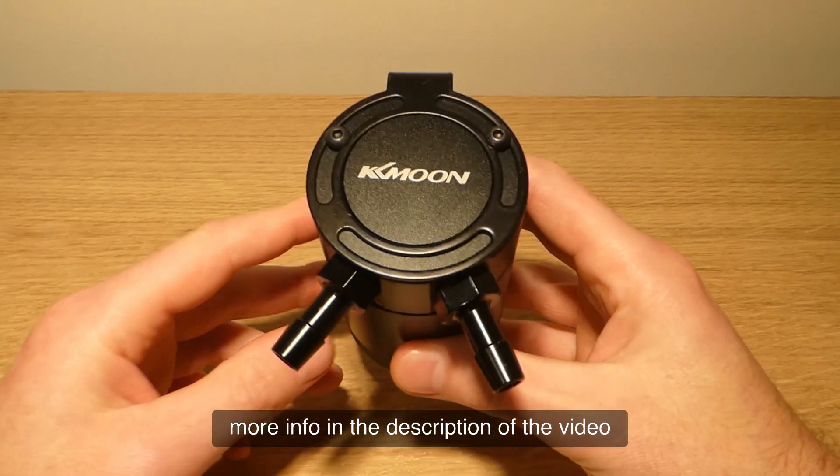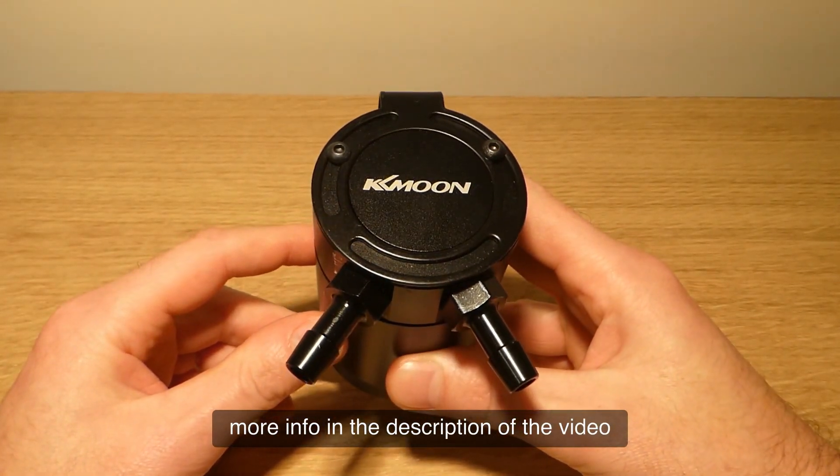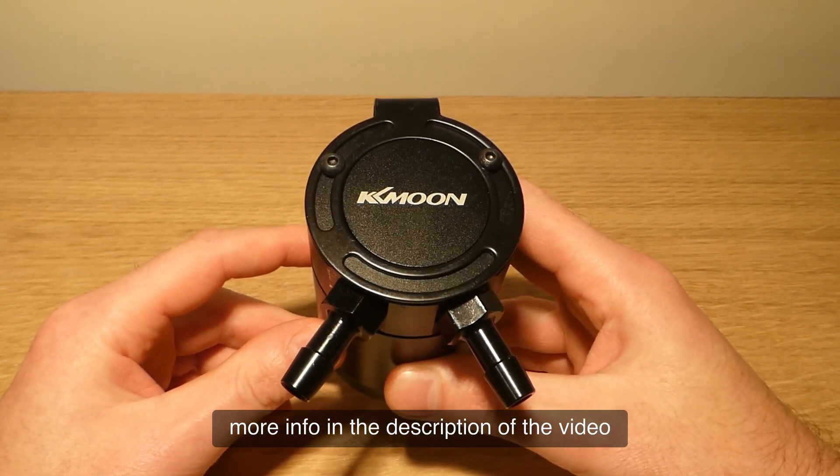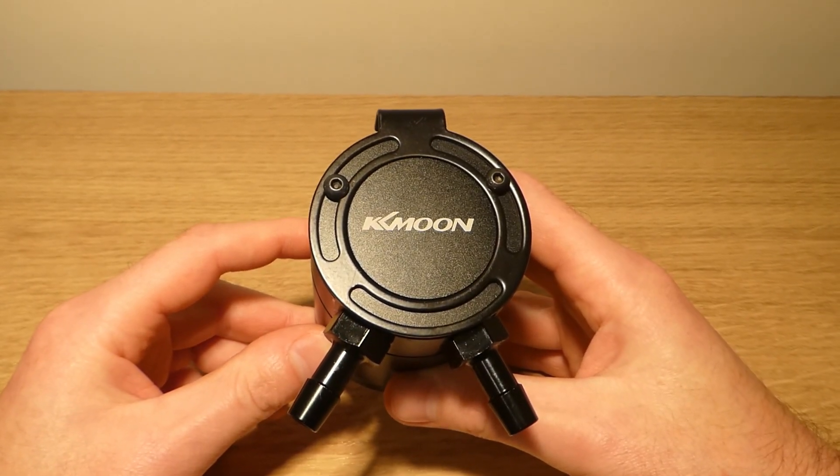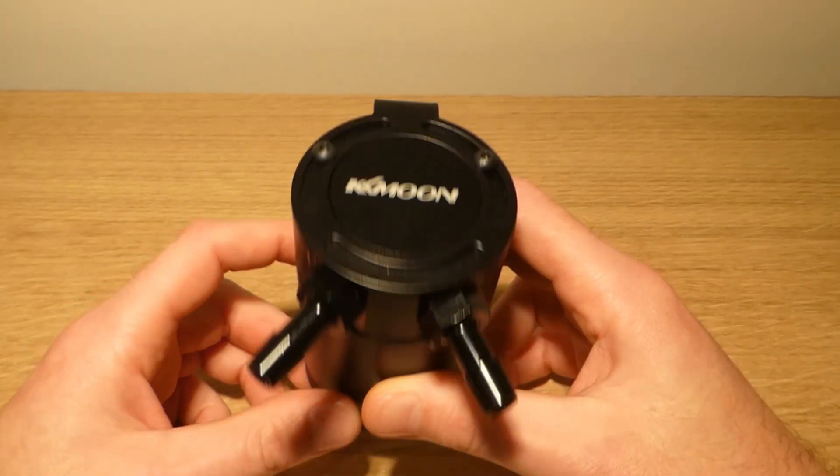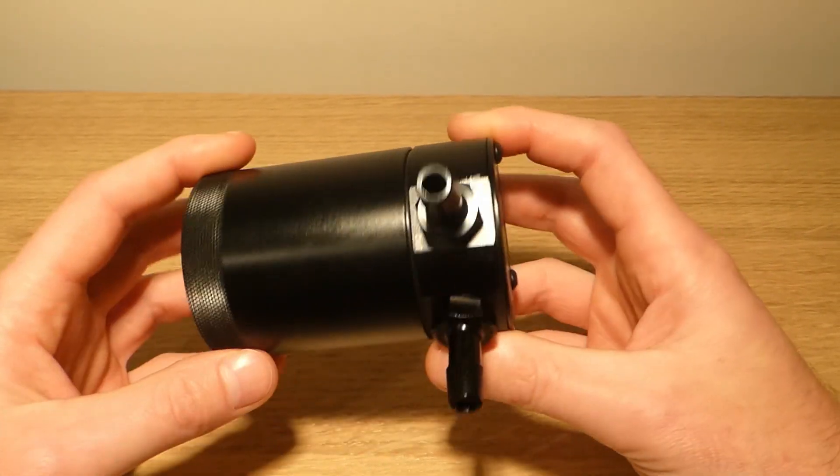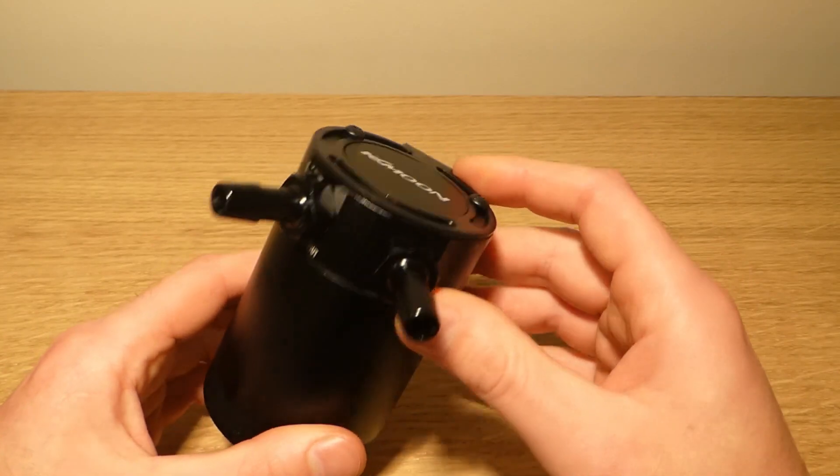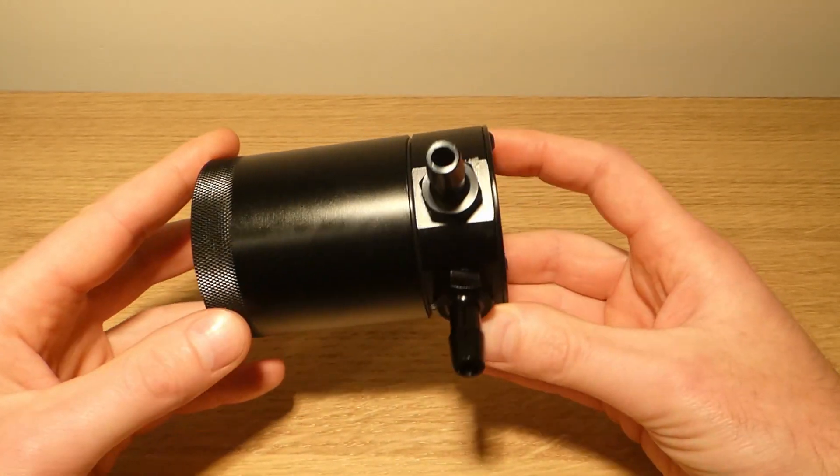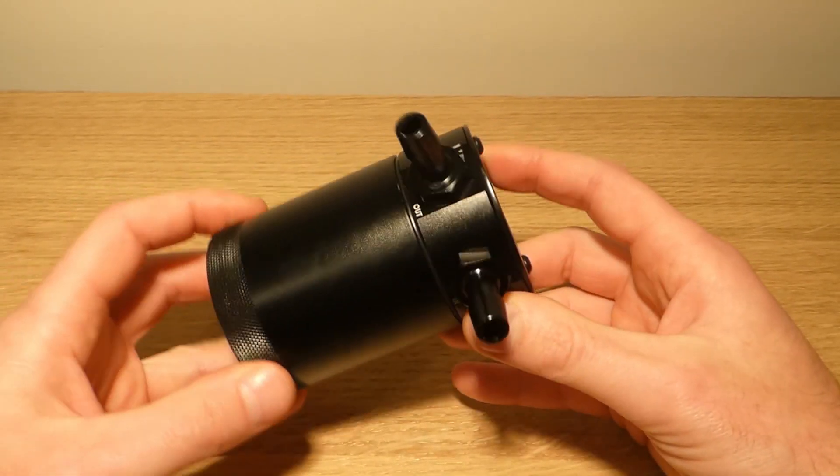This oil catch can is fairly cheap and it's called KKmoon. It's nearly a carbon copy of the Mishimoto oil catch can, and a comparison between this copy and the actual Mishimoto can be found here.